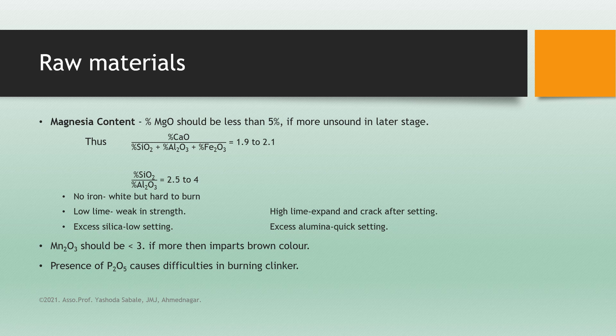Effects of specific constituents: if there is no iron, we get white cement, but it is hard to burn. Low lime makes the cement weak in strength. Excess silica gives low-setting cement. High lime causes the cement to expand and crack after setting. Excess alumina gives quick-setting cement. Mn₂O₃ should be less than 3%; if more than 3%, it imparts brown color to the cement. Presence of phosphorus pentoxide causes difficulties in burning of the clinker.